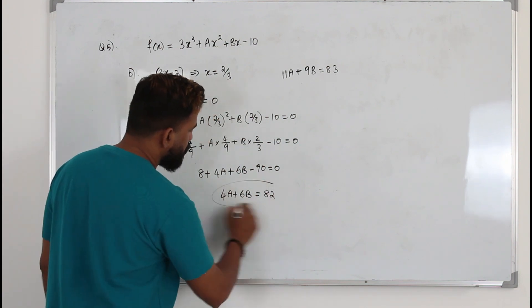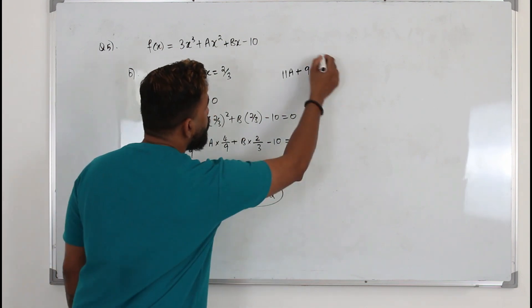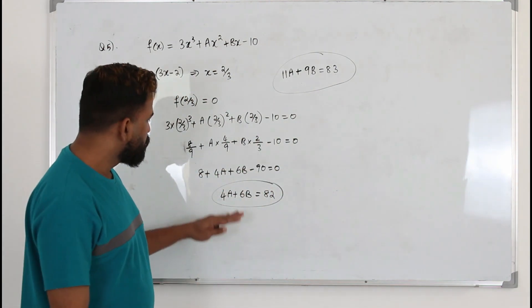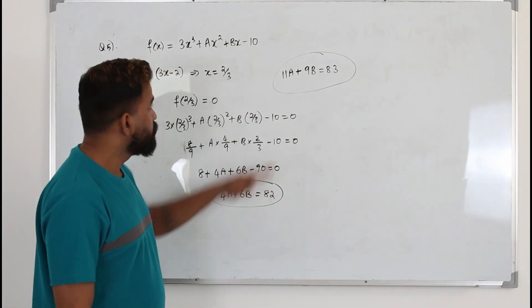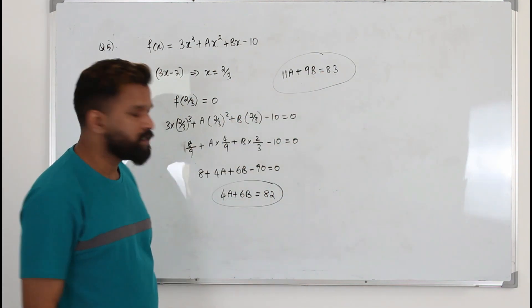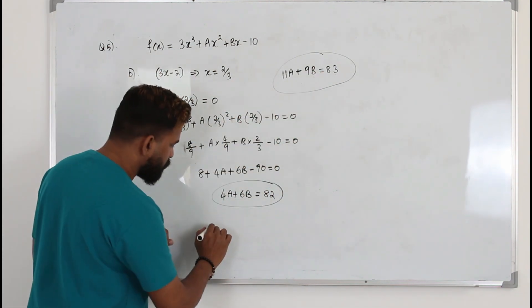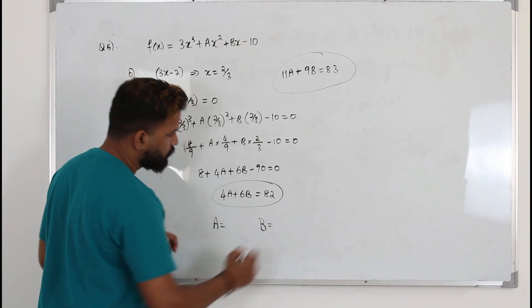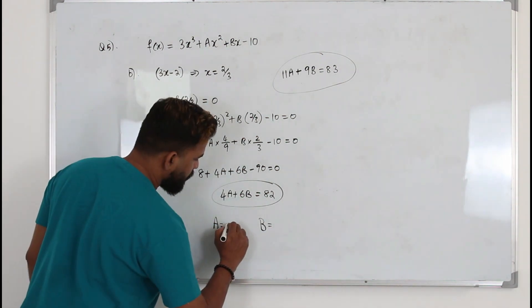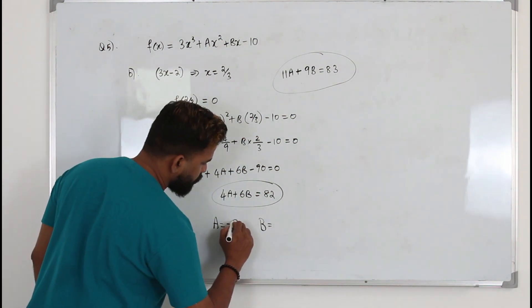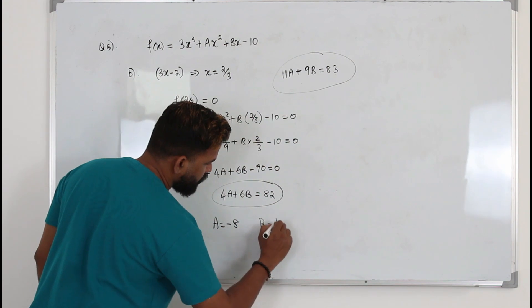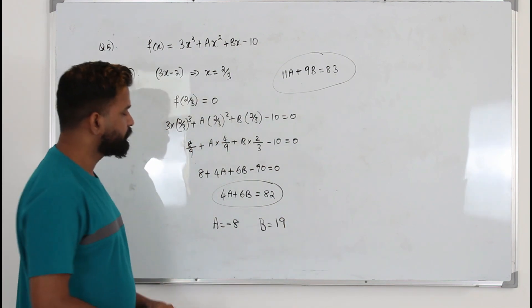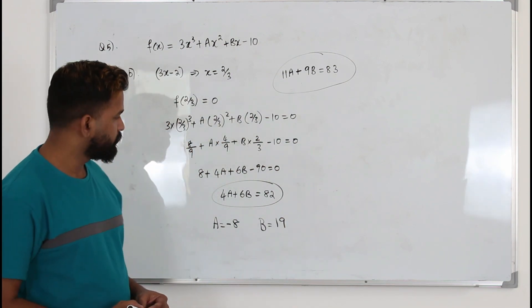You now have two equations. Use any method you know to solve these simultaneous equations and find a and b. The solution gives a = -8 and b = 19.